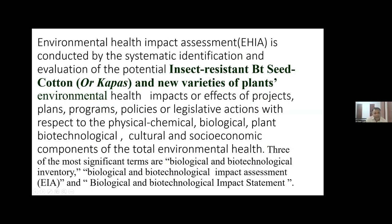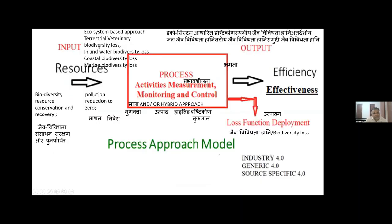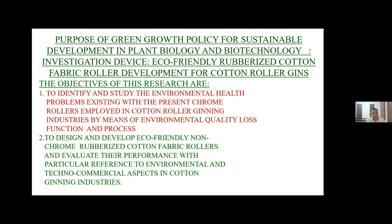The environmental health impact assessment for the insect-resistant BT seed cotton has already been presented. This is the biodiversity loss, especially due to genetically modified organisms — how biodiversity loss has taken place. That is measured, monitored, and controlled by means of what is called the cross-functional approach. The purpose of this research is to identify and study the environmental health problems existing with the present chrome rollers employed in cotton ginning industries, and also to understand the environmental quality loss function by means of a process approach. To design and develop eco-friendly non-chrome rubberized cotton fabric rollers and evaluate their performance with reference to environmental and social impacts.